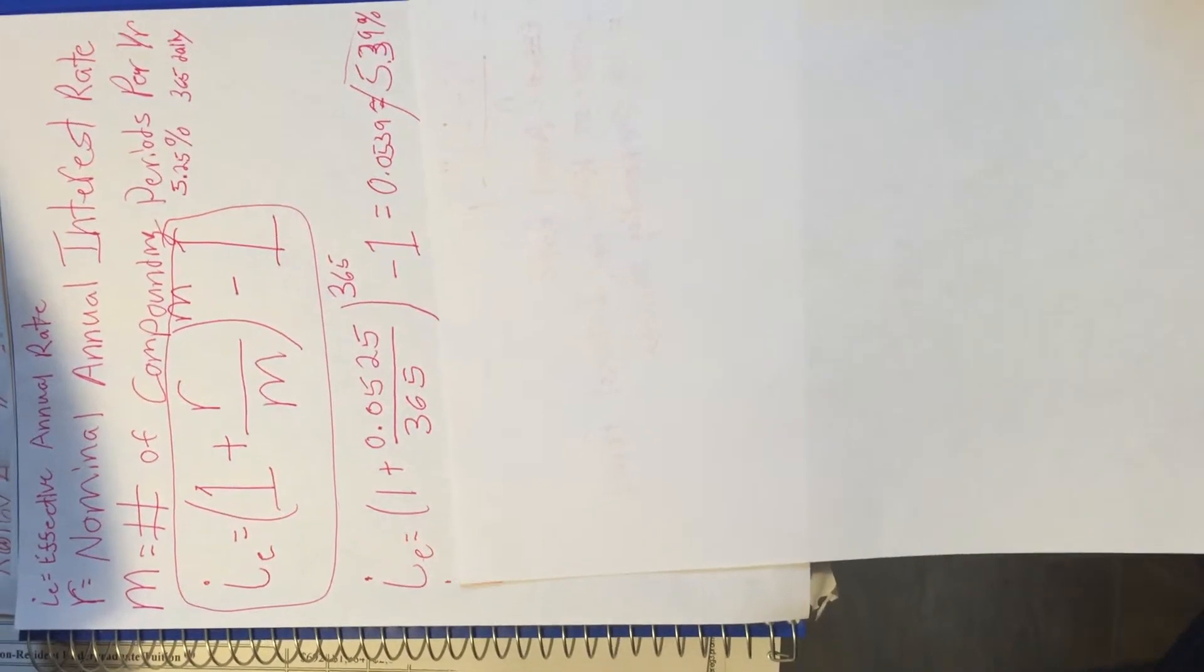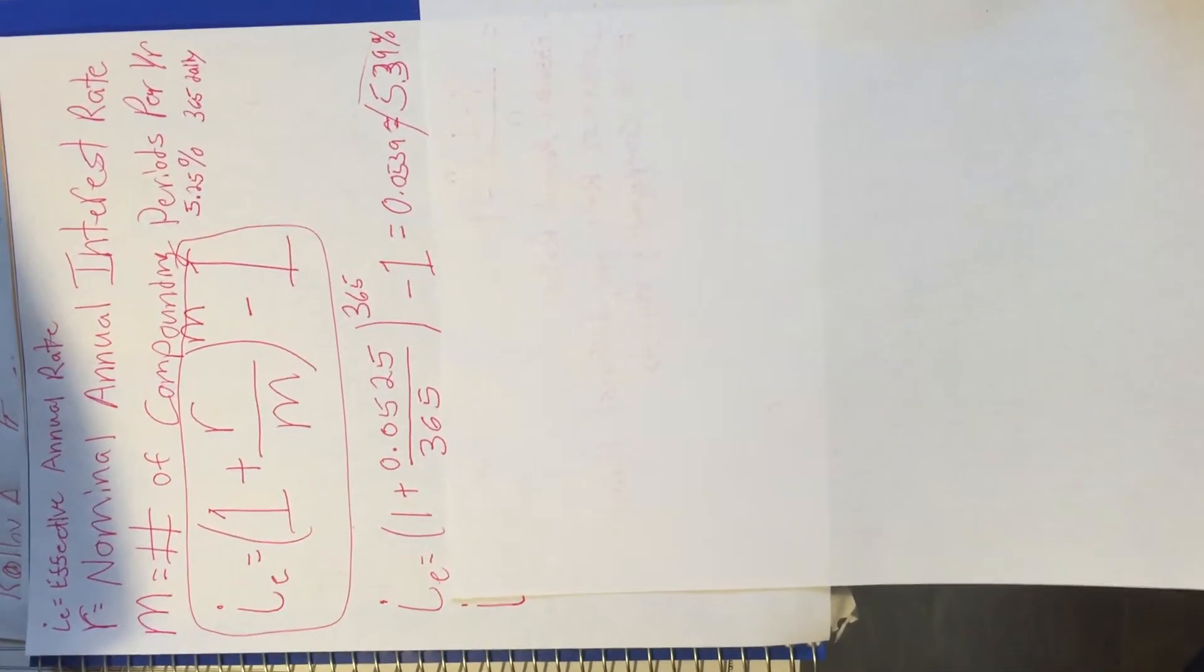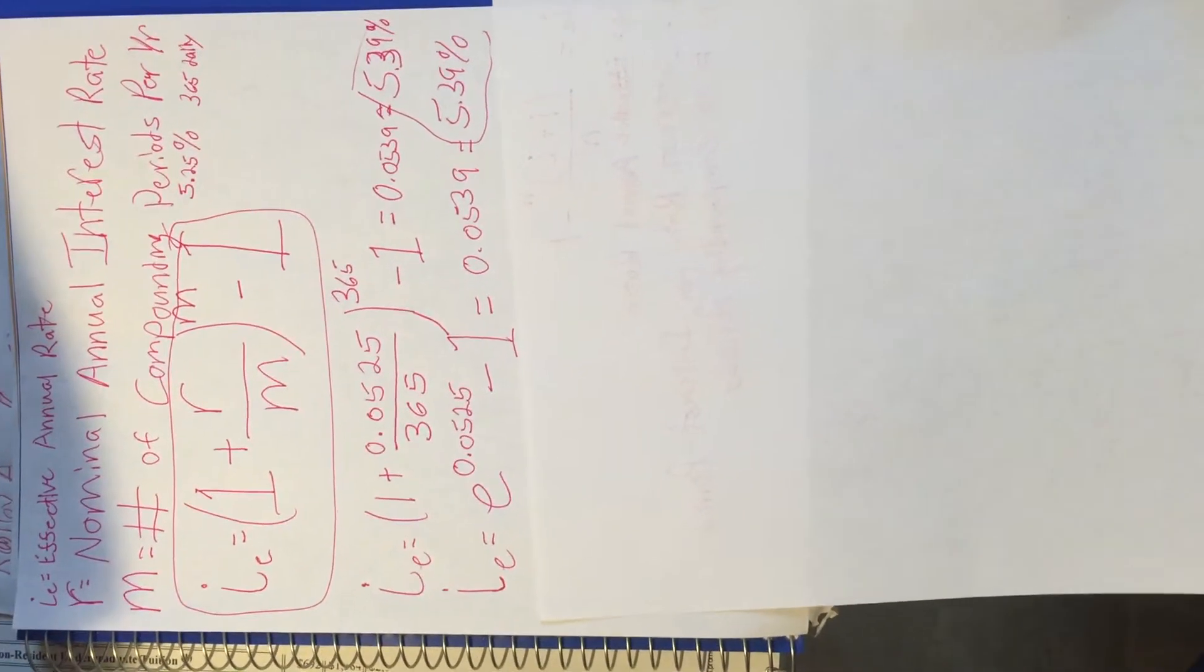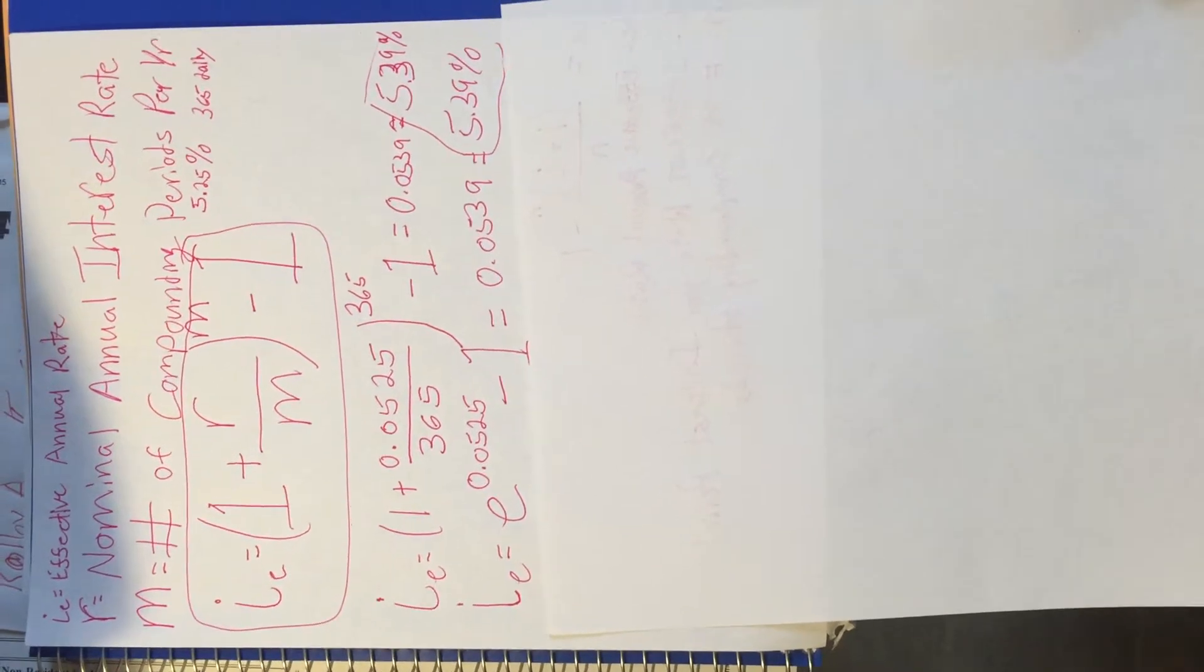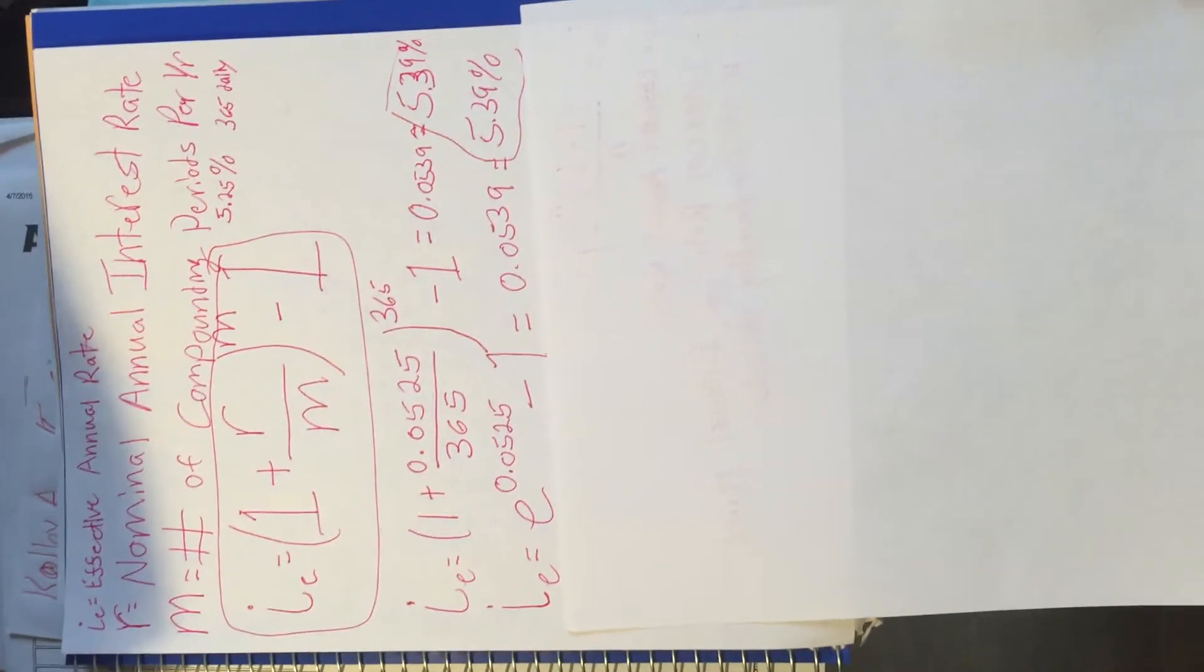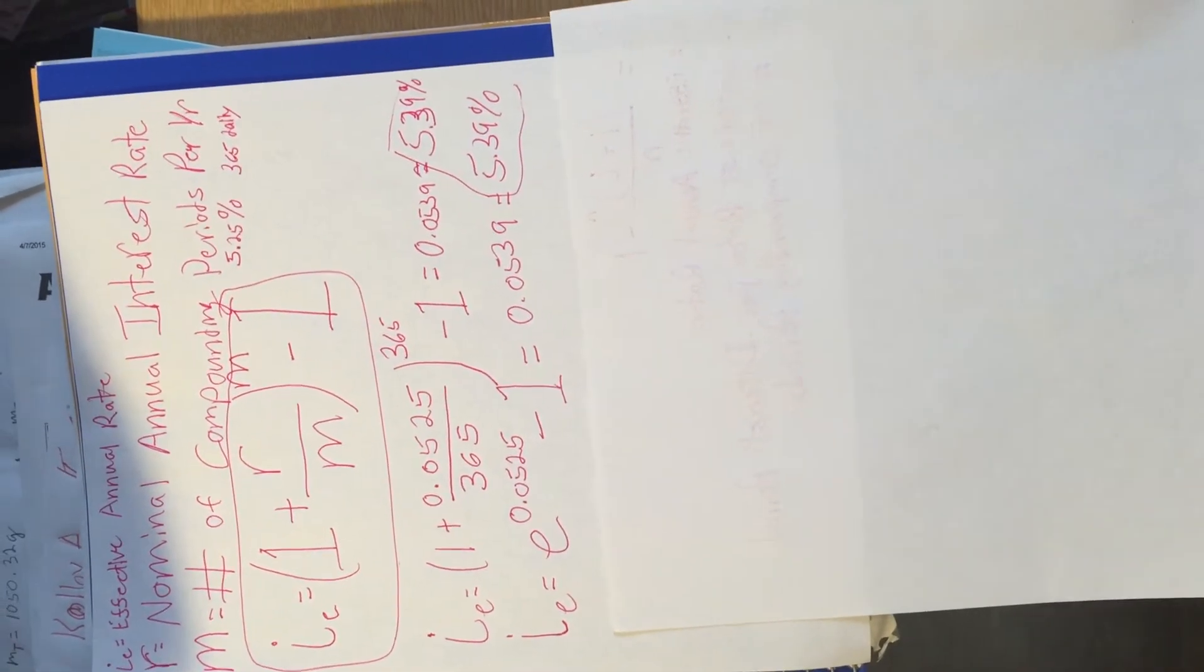Then the second part is, is it the same as the compounded continuous interest? This is another formula from the reference, and this uses the e exponential. So you just plug in as e to the rate 0.0525 and subtract one. And you happen to get the same percentage.